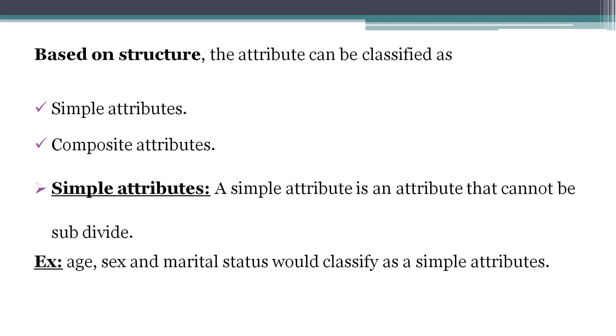Coming to classification based on structure: attributes can be derived into two types based on structure — first one, simple attribute; second one, composite attribute.